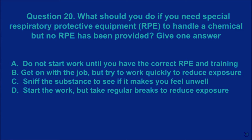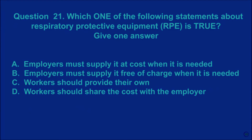Question 20: What should you do if you need special respiratory protective equipment (RPE) to handle a chemical but no RPE has been provided? Give one answer. A: do not start work until you have the correct RPE and training. B: get on with the job but try to work quickly to reduce exposure. C: sniff the substance to see if it makes you feel unwell. D: start the work but take regular breaks to reduce exposure. The correct answer is A.